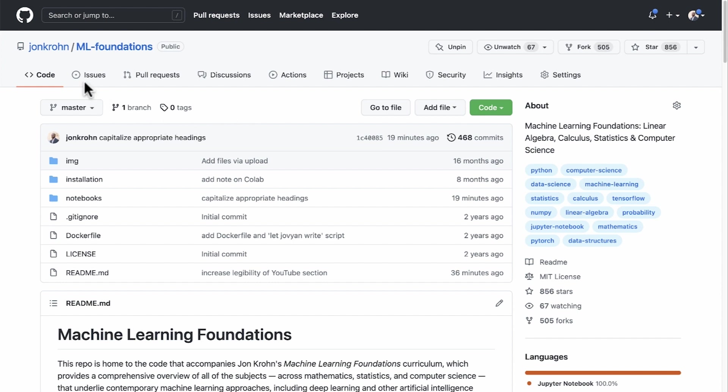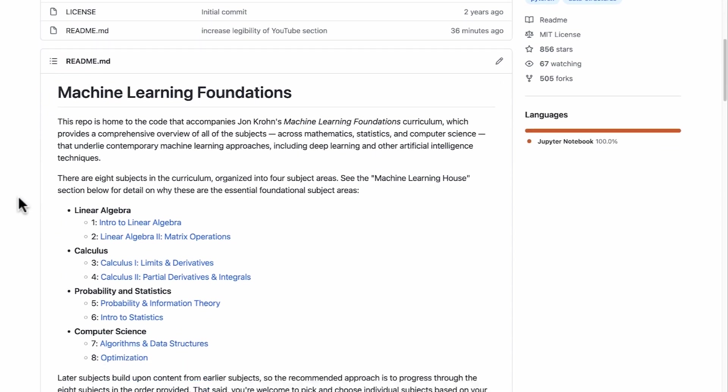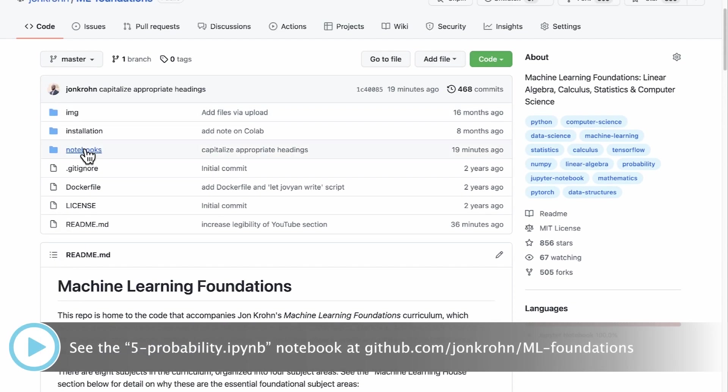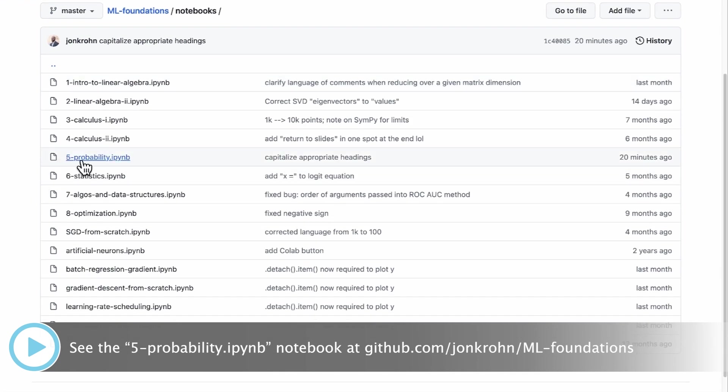We're going to make our way to the Machine Learning Foundations GitHub repository. From here, you can either click on this Subject 5 Probability and Information Theory link to open the notebook, or you can go into Notebooks into this directory and open up the same probability notebook here.